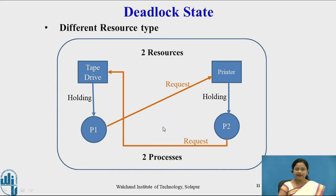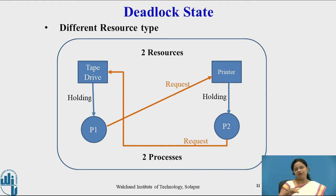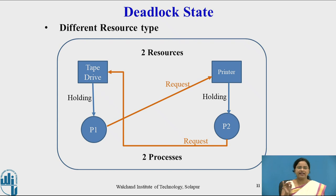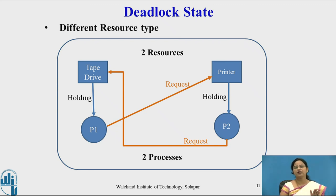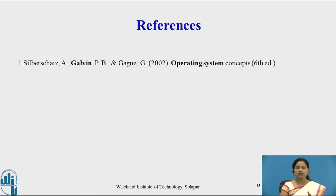Both P1 and P2 are in the waiting state and will never release tape drive and printer, so neither process gets its requested resource. The system enters a deadlock state. This is how deadlock occurs — when all processes enter the waiting state, waiting for each other, and the system cannot perform any fruitful task. Processes in this waiting state are said to be in a deadlock state.